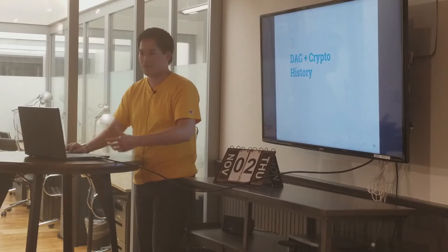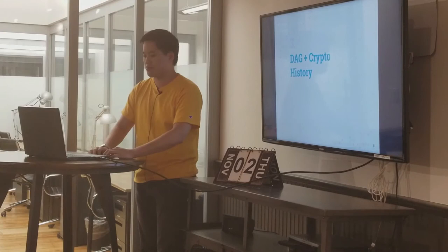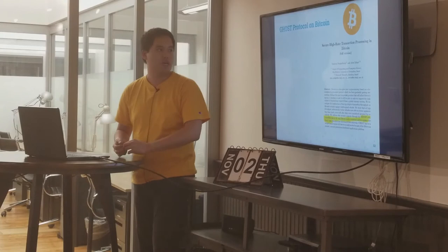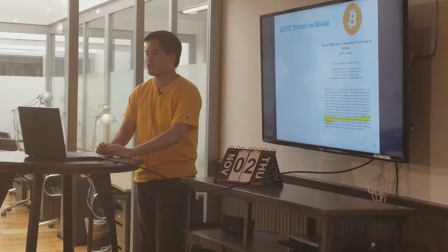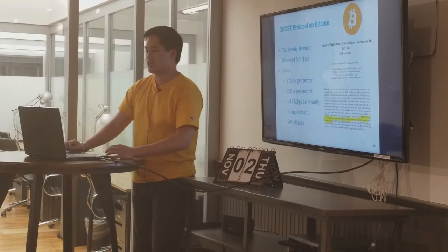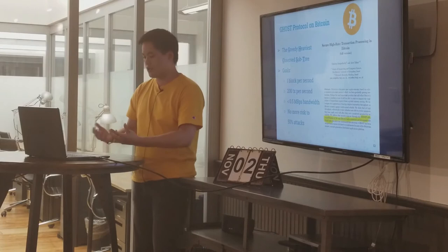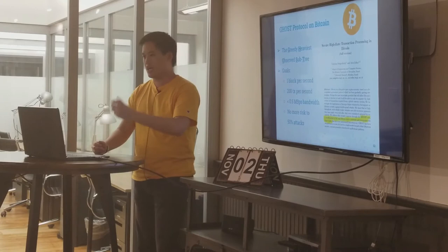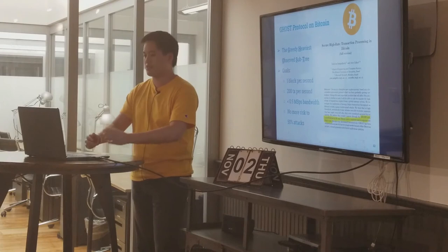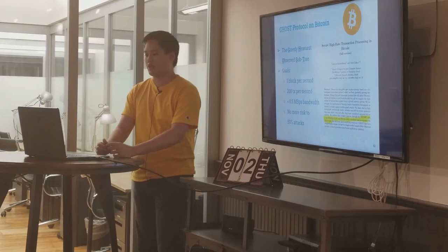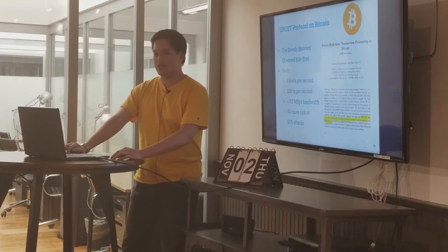Now let's up the difficulty and discuss how DAGs are used in cryptocurrency. The first proposal to add a DAG structure was the GHOST proposal on Bitcoin, written by Aviv and Jonathan, brilliant mathematician-academics from Israel. GHOST stands for Greediest Heaviest Observed Subtree. They were aware of Bitcoin's scalability issues and aimed to create block creation from one block per 10 minutes to one block per second, and increase to around 200 transactions per second.